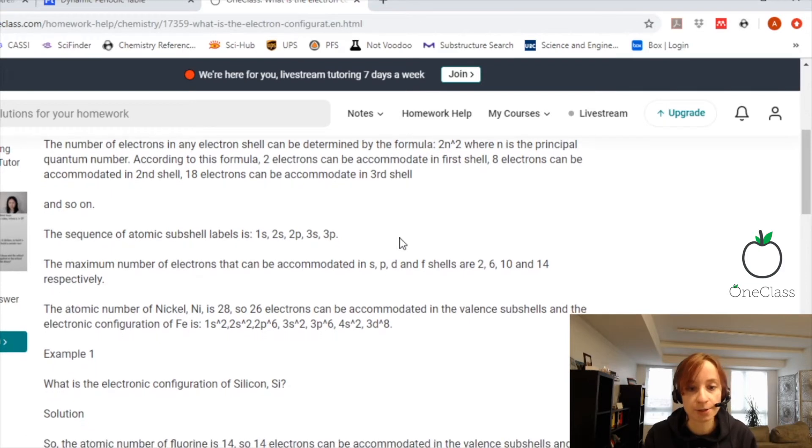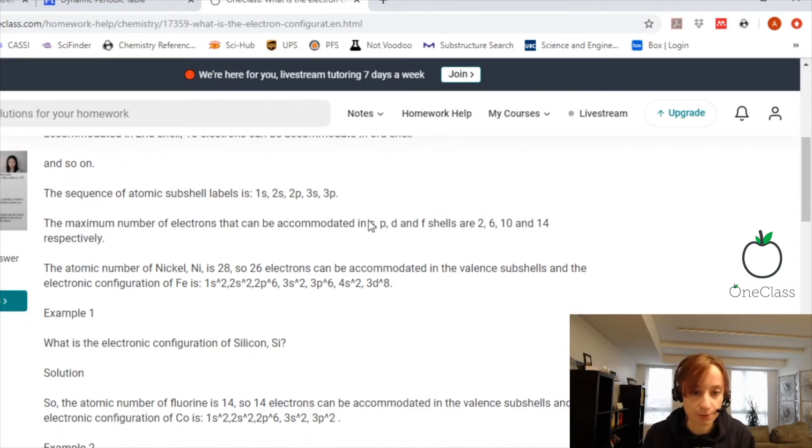The atomic subshells are S, P, D, and F. I'll show you how they're ordered on the periodic table in a second.